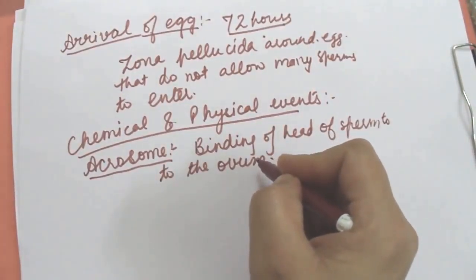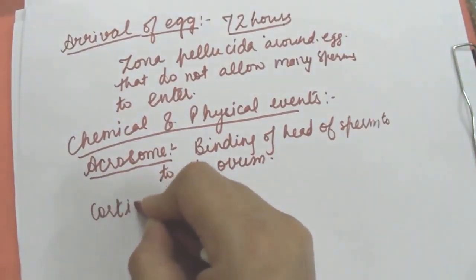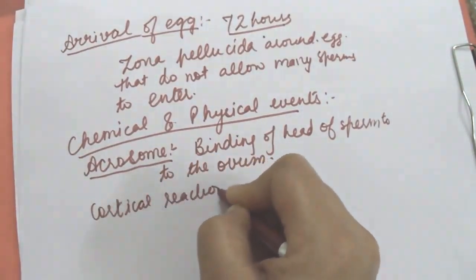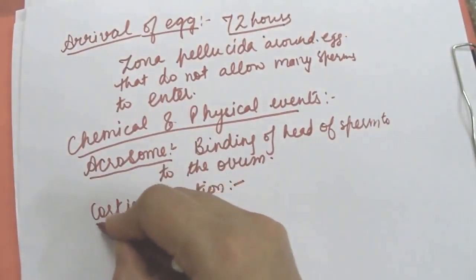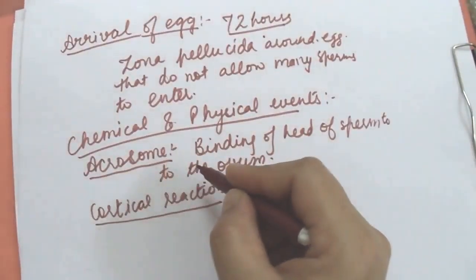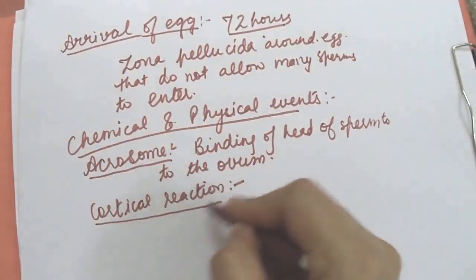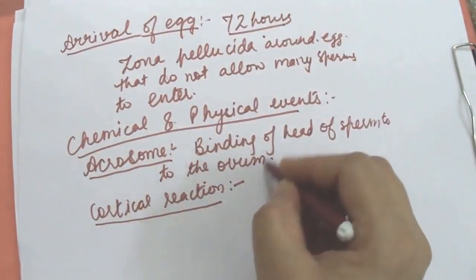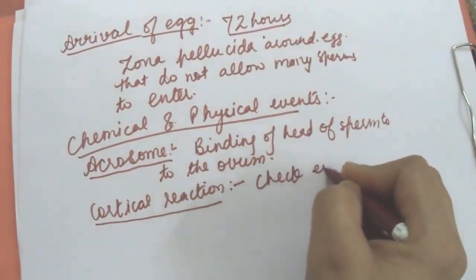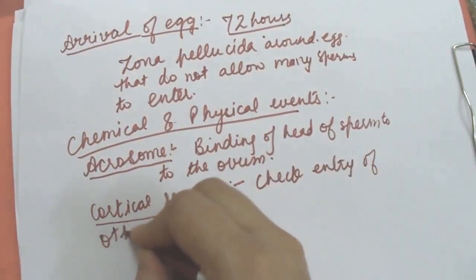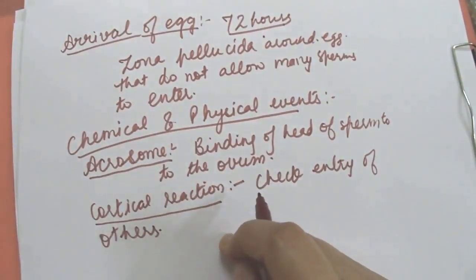Next is cortical reaction. Cortical reaction means immediately after the fusion of the sperm and the egg, the egg shows cortical reaction. After the fusion of the sperm and the egg, the egg shows cortical reaction to further check the entry of the more sperm. It will check the entry of other sperm.